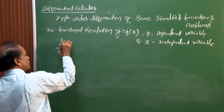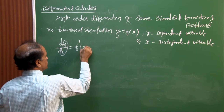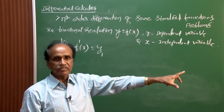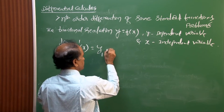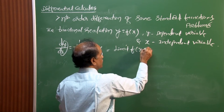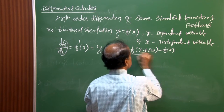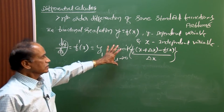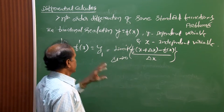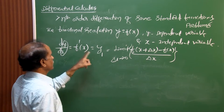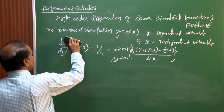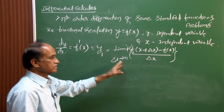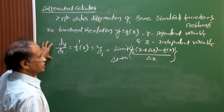We write dy/dx = f'(x), also called y₁. This is the first-order derivative. Its basic definition is the limit of [f(x + Δx) − f(x)] / Δx as Δx approaches 0. So dy/dx expresses that y is a function of x — y is the dependent variable and x is the independent variable.